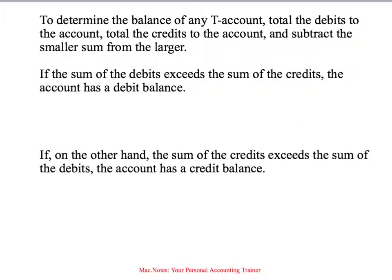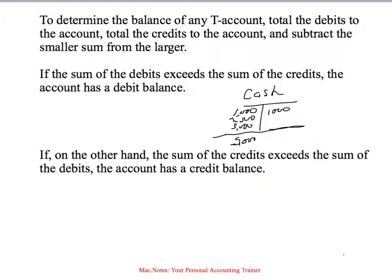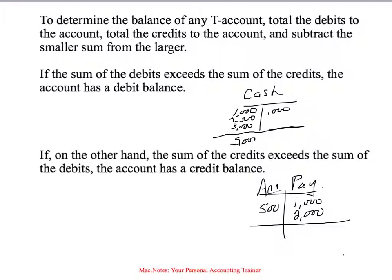To determine the balance of any T-account, you total the debits and credits. For example, if cash has debits of $1,000, $2,000, and $3,000, and a credit of $1,000, you add up the debits — $6,000 debits minus $1,000 credits — giving cash a debit balance of $5,000. On a liability account like accounts payable, if we had $1,000 and owed another $2,000 on the credit side, and paid off $500 on the debit side, the balance is a credit balance of $2,500. That's how we use debits and credits.